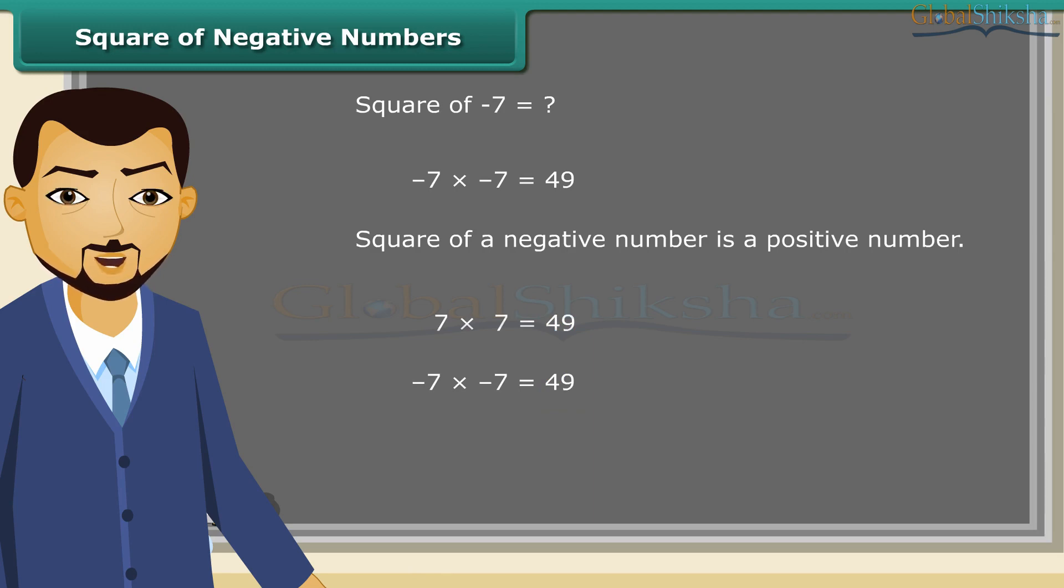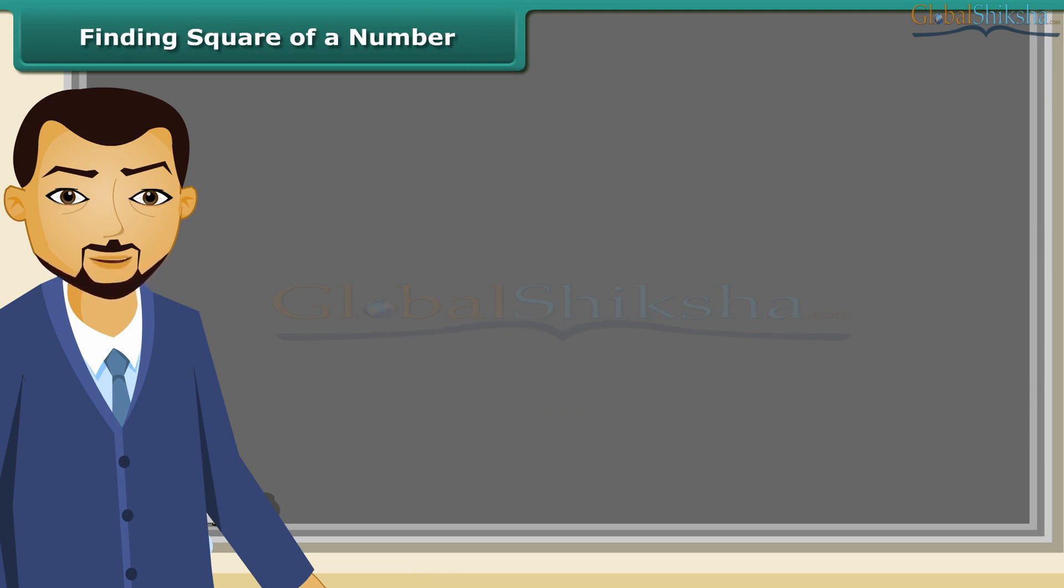Let us know about square roots now. We can easily find the squares of small numbers like 7, 4, 5, etc. But is it easy to find the square of 27 so quickly? Let us find how we may find the square root of 27.